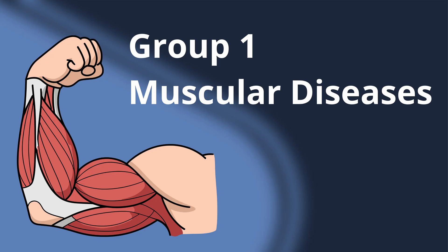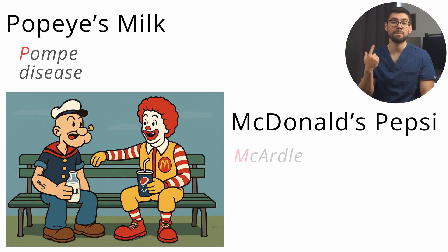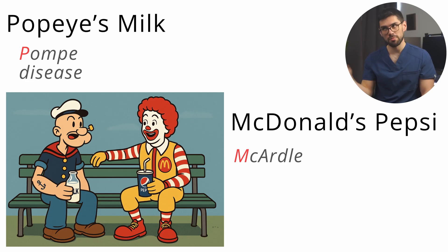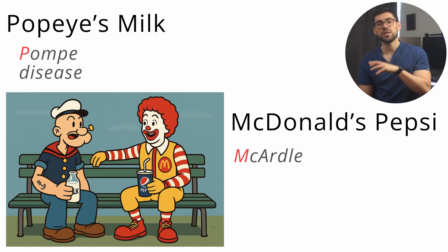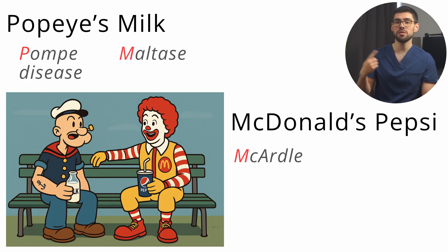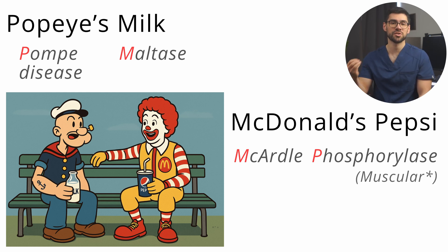Group one: muscular diseases. In this group we have two lines — Popeye's milk and McDonald's Pepsi — which reminds us of the two classic mainly muscular disorders: Pompe disease and McArdle disease. The P in Popeye's stands for Pompe, and the M in McDonald's stands for McArdle. The drink each of them is holding reminds us of the enzyme deficient in each disease: M in milk is for maltase and P in Pepsi is for phosphorylase — specifically, the muscular phosphorylase.